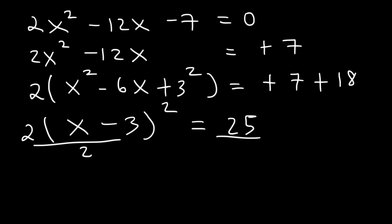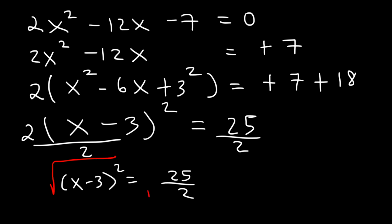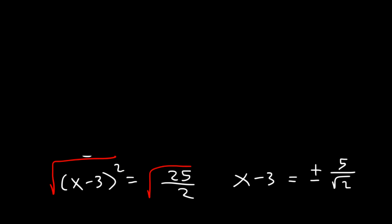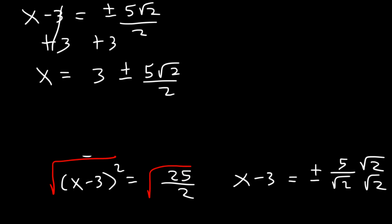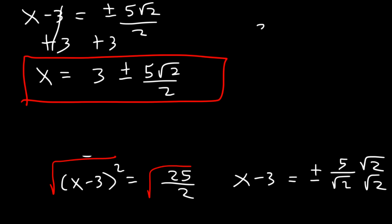Now let's divide by 2. So x minus 3 squared is equal to 25 divided by 2. Now we can take the square root of both sides. On the left it's just going to be x minus 3. On the right, plus or minus, the square root of 25 is 5, and the square root of 2 we'll just leave as root 2. Now let's rationalize this expression. Let's multiply the top and the bottom by root 2. So x minus 3 is equal to plus or minus 5 root 2 over 2. Now all we can do is add 3 to both sides. So x is equal to 3 plus or minus 5 root 2 over 2. We can't add 3 and 5 root 2 over 2 together, so we're just going to leave it like this. There are two answers: 3 plus 5 root 2 over 2, and 3 minus 5 root 2 over 2.